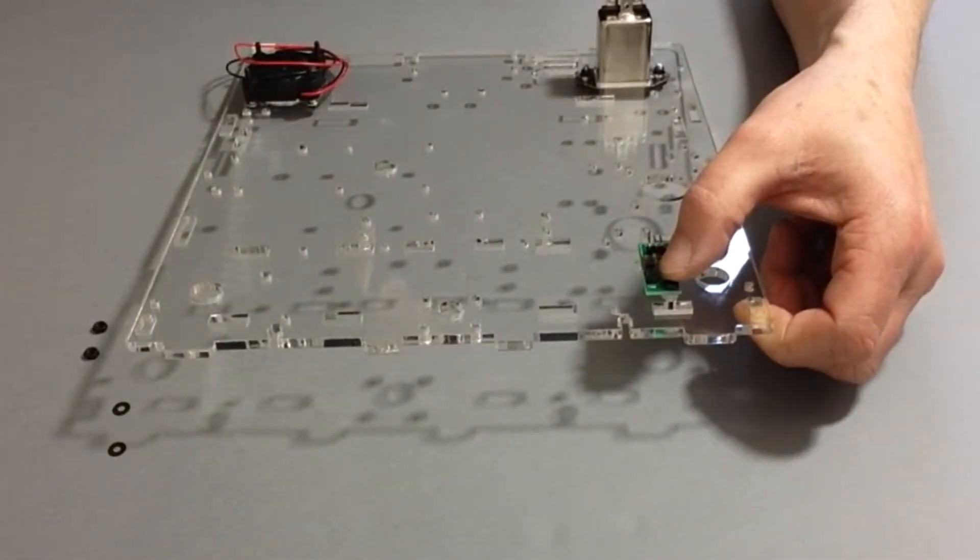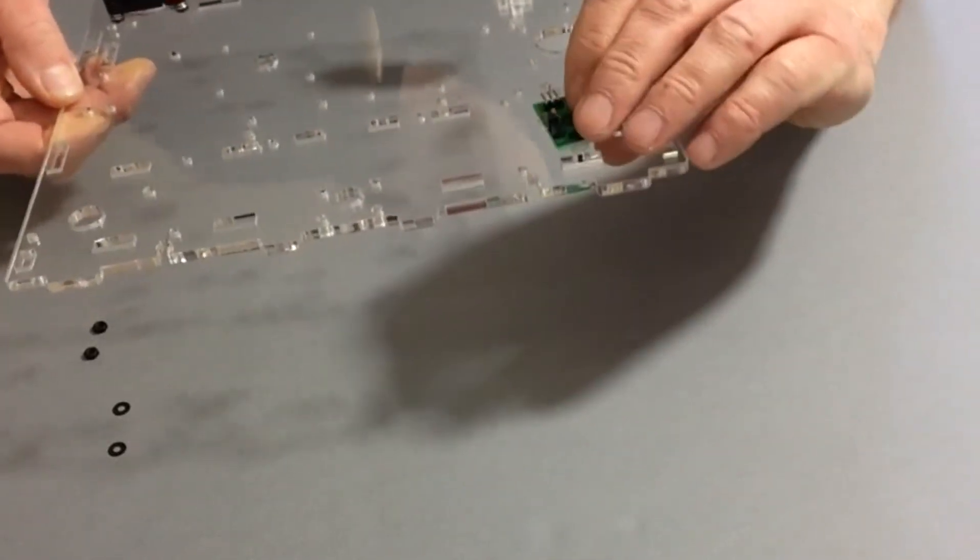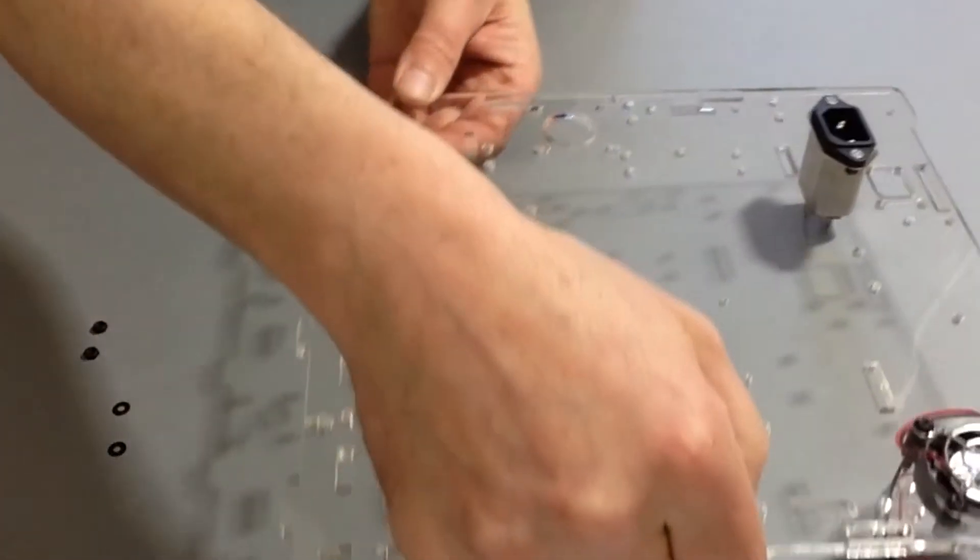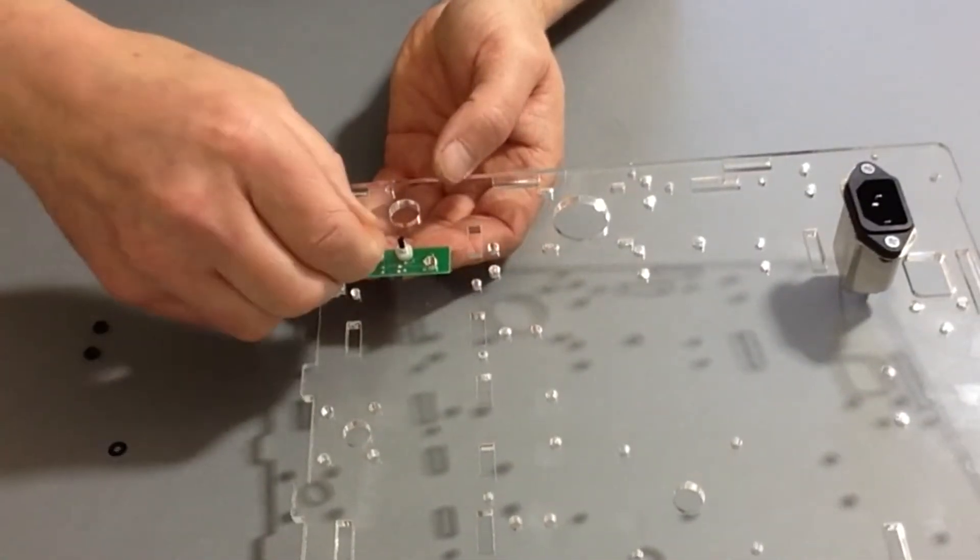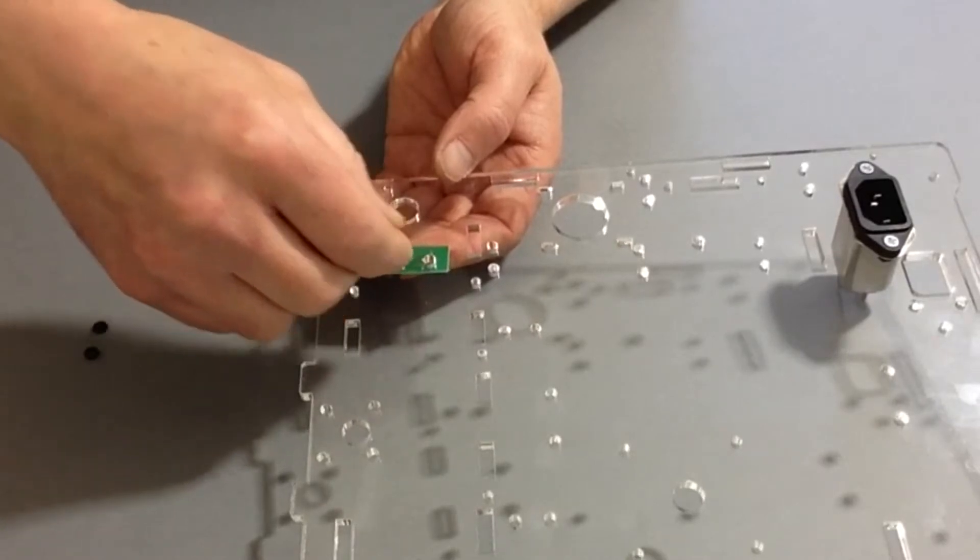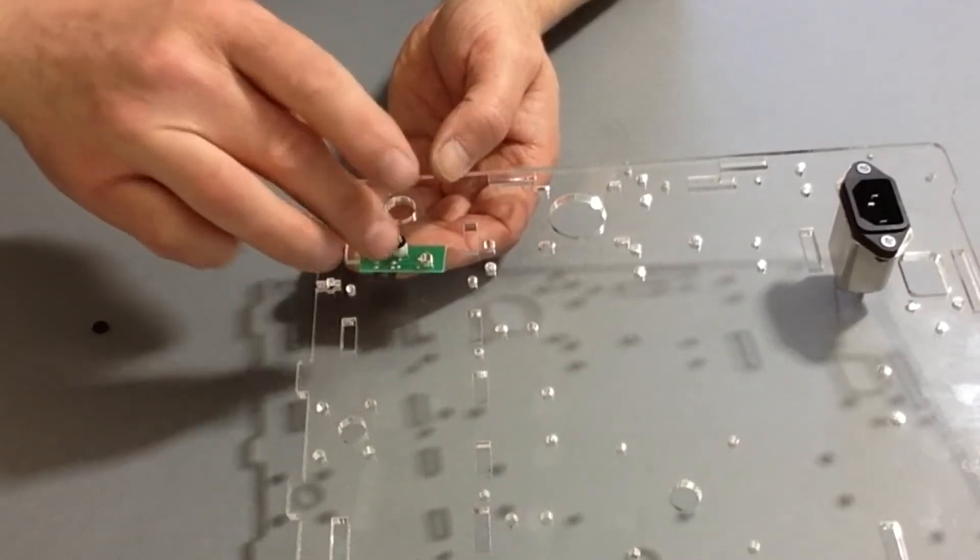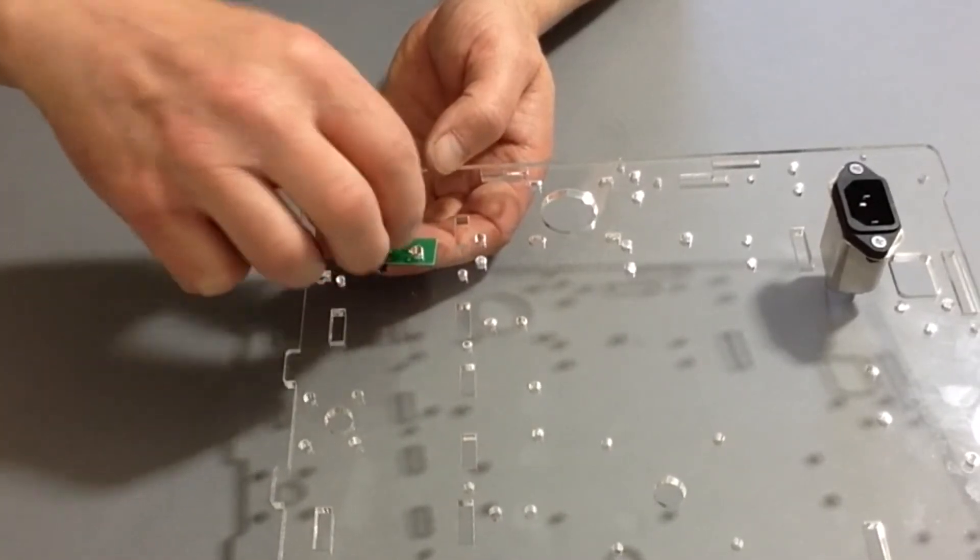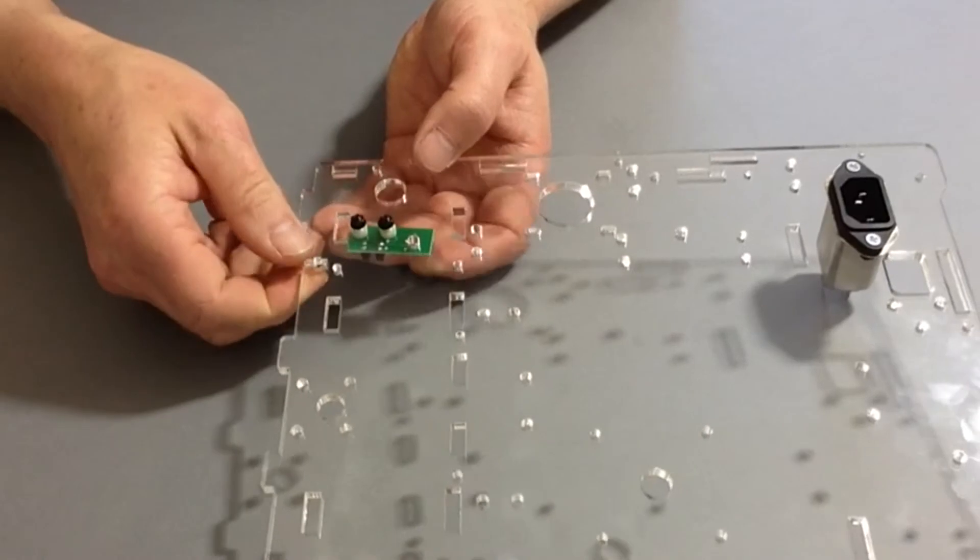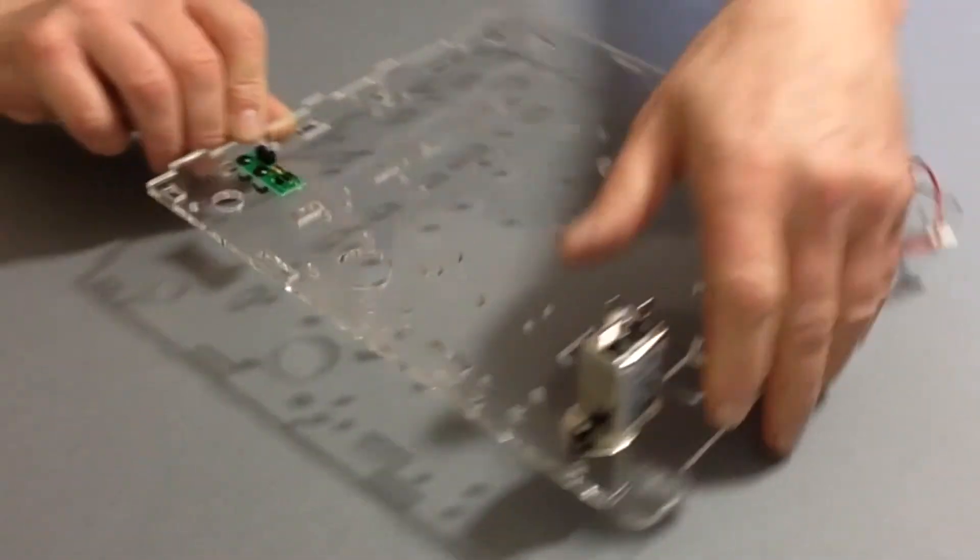So once you've done that and you've got those on, we're then going to gently turn it over as you can see here, and then we're going to place a couple of washers on the back and then fit the M3 nuts on there like so. And then once we've done that, turn it back over.